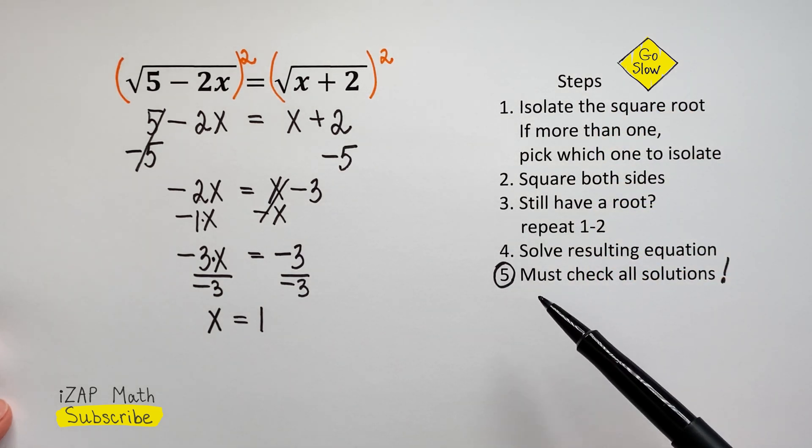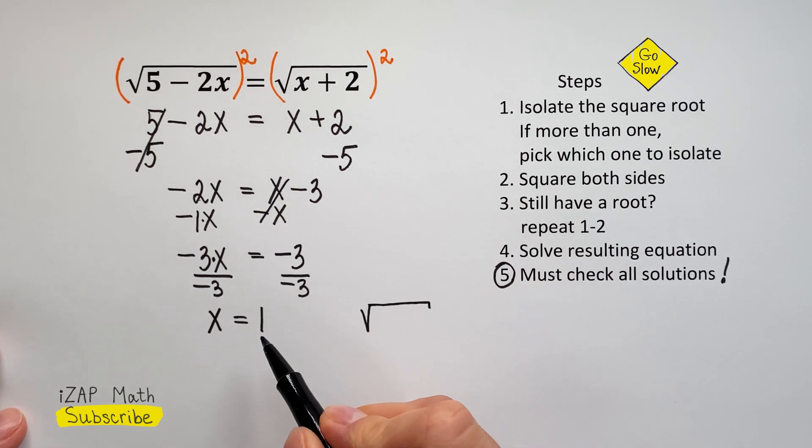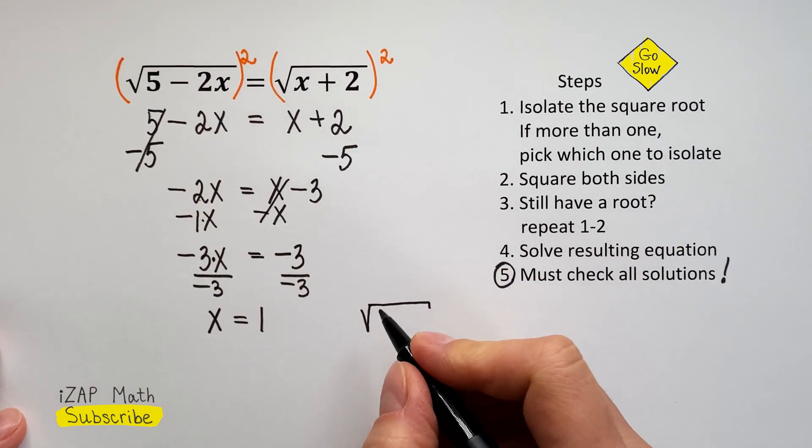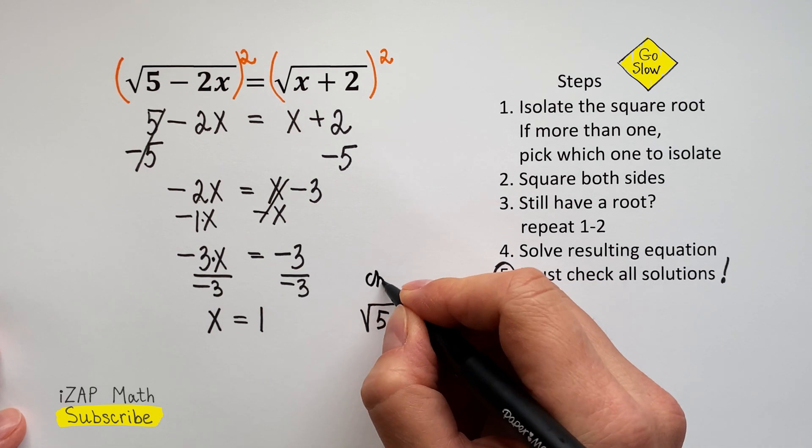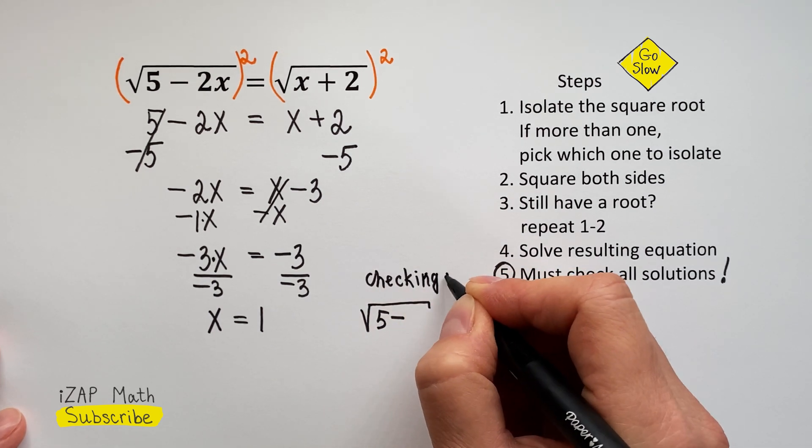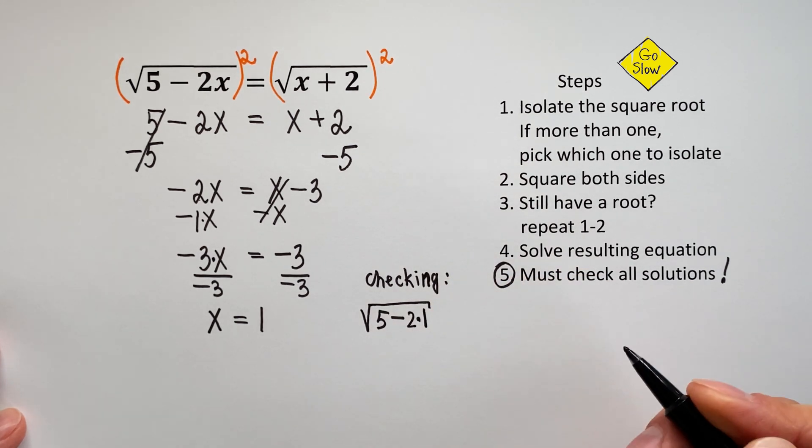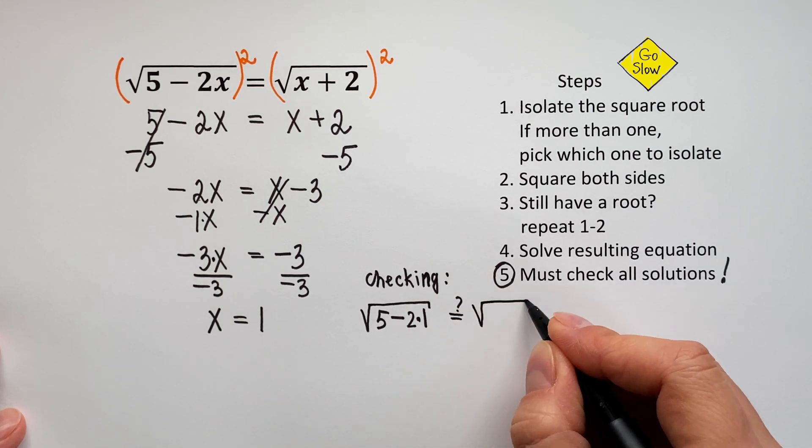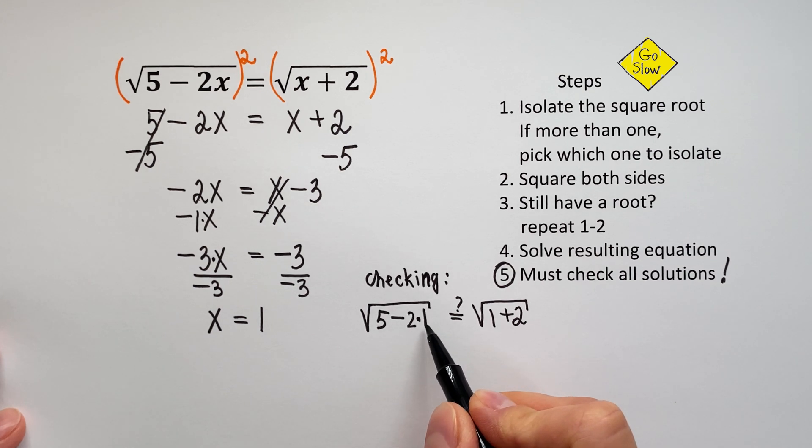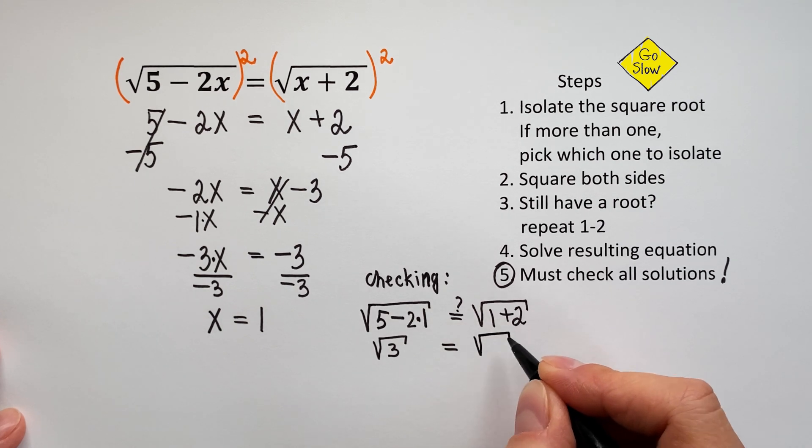So let's check it. I'm going to rewrite my original equation, and I'm going to take 1 and plug in everywhere where I see X. So we are checking. So 5 minus 2 times 1, is it equal to square root of 1 plus 2? Now let's see, 5 minus 2 times 1 will be square root of 3, and on the right side we also got square root of 3.